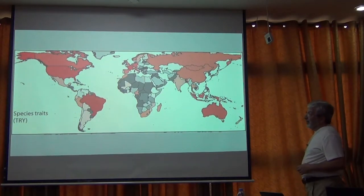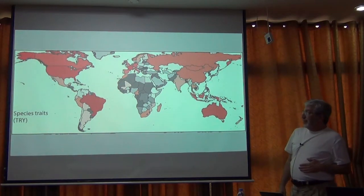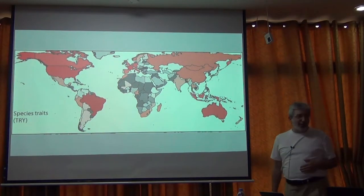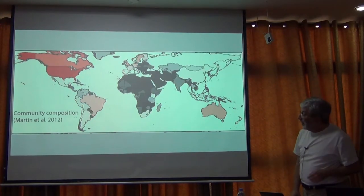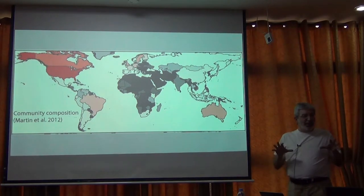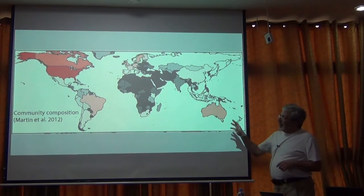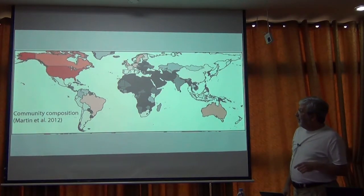For species traits, Aaron told you about the TRI dataset. What you see here is that Africa is particularly absent, along with the Middle East and Central Asia. Moving on to data specifically on community composition — what a community ecologist would call community composition — there's basically a big North American and maybe European and Australian bias.